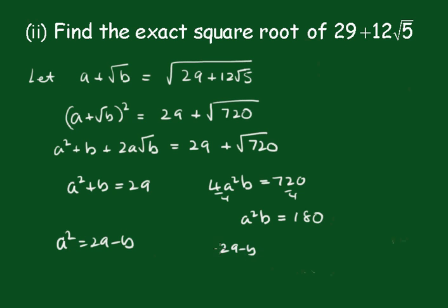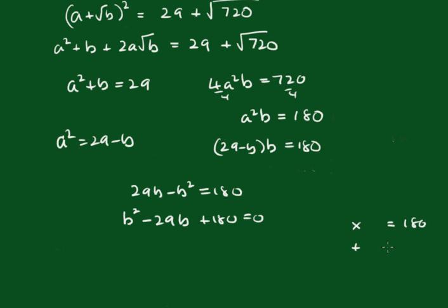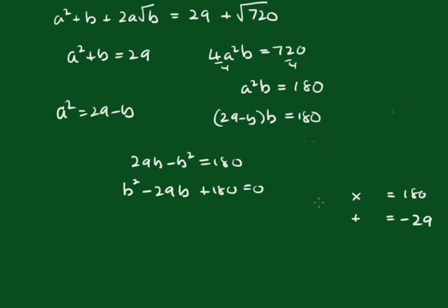So (29 minus b) times b equals 180, giving 29b minus b squared equals 180. Forming the quadratic we get b squared minus 29b plus 180 equals 0. What two numbers multiply together to give 180 and add up to give minus 29? They are minus 20 and minus 9. So it becomes (b minus 20)(b minus 9) equals 0.